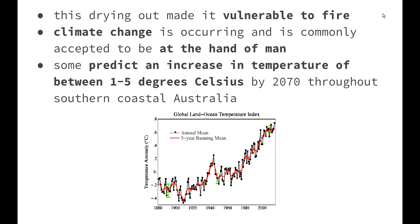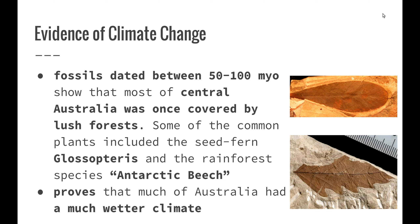So what is some evidence for climate change? Fossils dated between 50 and 100 million years old show that most of central Australia was once covered in lush forests. Some of the common plants included the seed fern Glossopteris and the rainforest species of the Antarctic beech. This proves that at that time much of Australia and much of Gondwana had a much wetter climate than today.